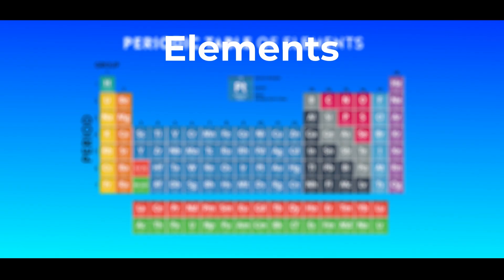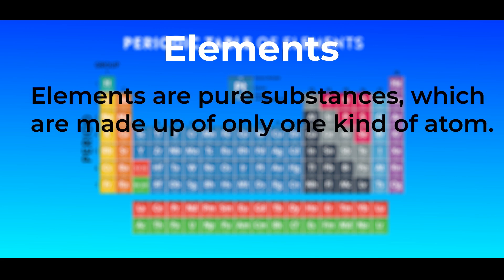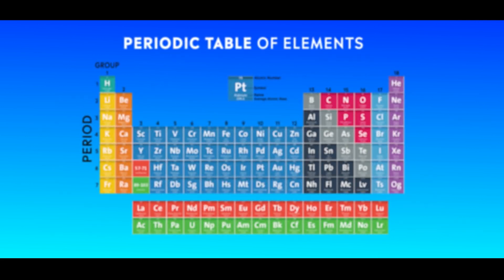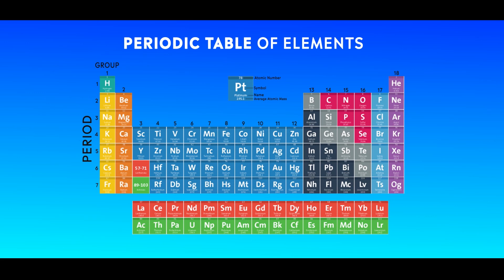Elements, as you have learnt in your lower classes, are pure substances which are made up of only one kind of atom. As of now, there are 118 elements organized into a specialized chart called the periodic table of elements. Let us have a look at the periodic table. In the periodic table, elements are represented by symbols.